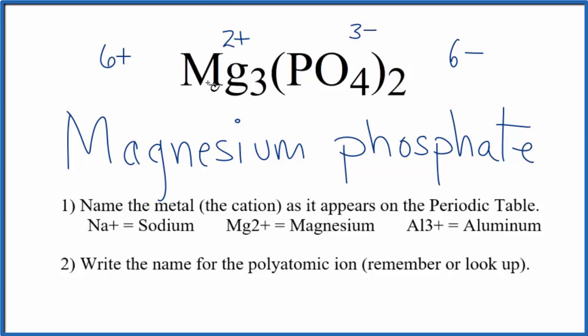So when we write the formula, we need 3 of these 2 plus magnesium ions to get 6 plus. That will cancel out the 6 minus, net charge of 0. So the formula for magnesium phosphate is Mg₃(PO₄)₂. We have 2 phosphate ions. The name, magnesium phosphate.